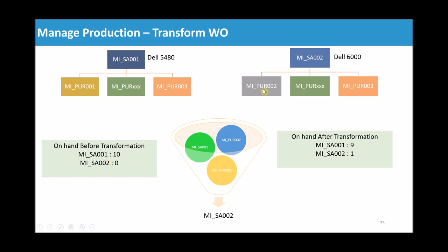To make MI_SA_002 we also need component MI_PUR_002, so we will issue two things: one sub-assembly MI_SA_001 and an extra raw material component MI_PUR_002 to the same Transform Work Order. When the product is completed we will have MI_SA_002, and there will also be a by-product of MI_PUR_001 returned as a negative issue — taken from MI_SA_001 back to inventory. So the two inputs are MI_SA_001 and MI_PUR_002, and the two outputs are MI_SA_002 as the primary output and MI_PUR_001 as the negative component return.